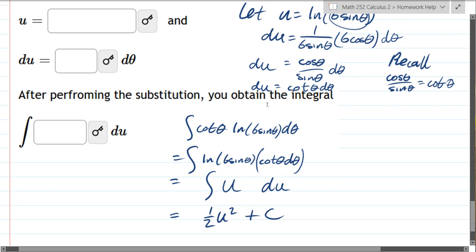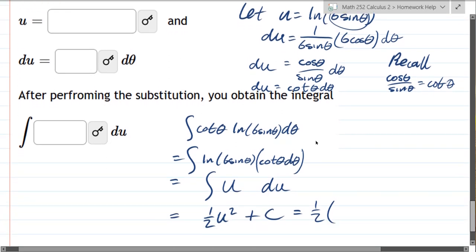We have to unsubstitute. So somewhere up there is u. It's the very, very top of the screen. One half ln of 6 sine theta squared plus c. There we go.